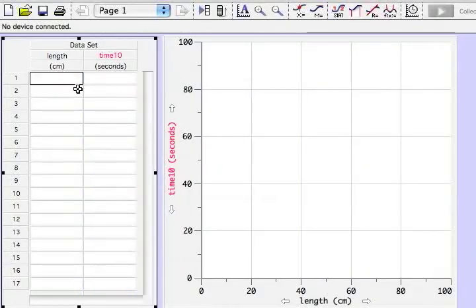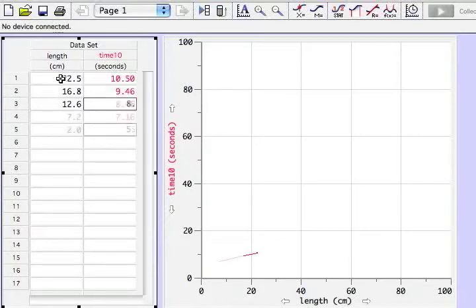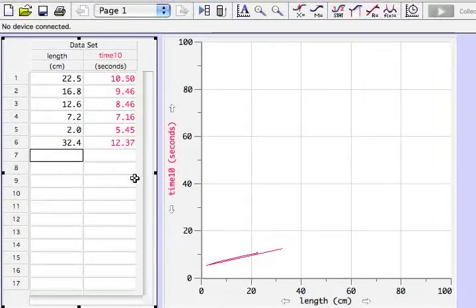You can start to enter the data. As you may remember, the first length was twenty-two and a half centimeters. The time was ten point five seconds. The next was sixteen point eight centimeters, nine point four six seconds. And we will continue entering data. And here at the end we have a long one, thirty-two point four, twelve point three seven seconds. Now all our data are entered.